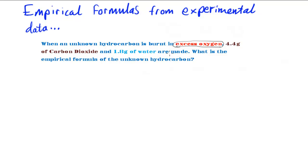When an unknown hydrocarbon is burned in excess oxygen, 4.4 grams of carbon dioxide and 1.8 grams of water are made. The question asks: what is the empirical formula of the unknown hydrocarbon? The first thing we notice is that this is similar to questions where we figure out moles from mass and molar mass.